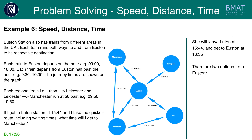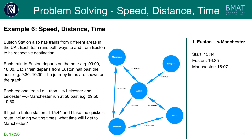She has to wait another 55 minutes for a train at 1730. From 1730 she has two options from Euston: option one going directly to Manchester, and option two going via Leicester. With option one, going directly to Manchester, she would get to Manchester at 1807 because all trains depart from Euston on the half hour — she'd get the train at 1730 and 37 minutes' travel means she arrives at 1807.